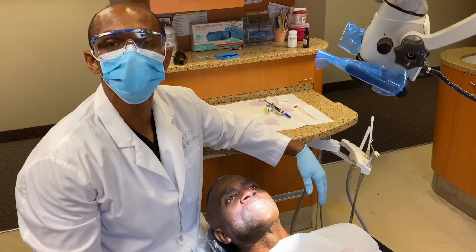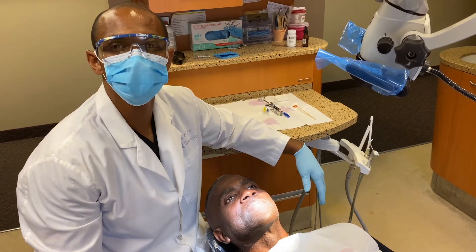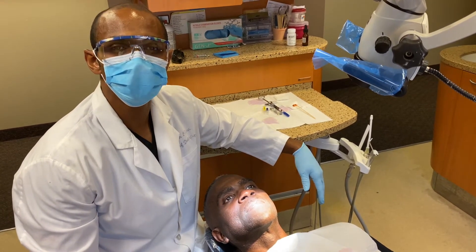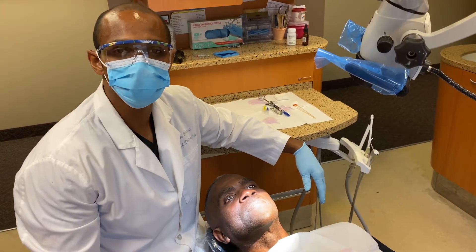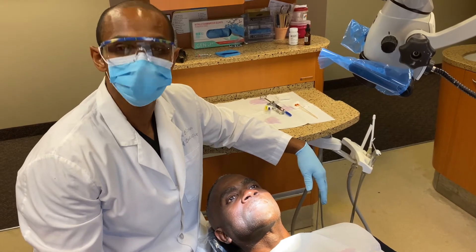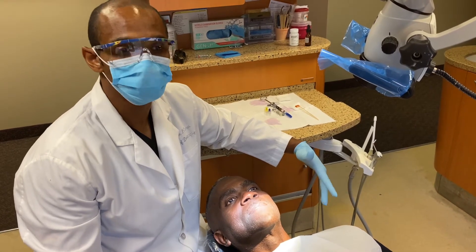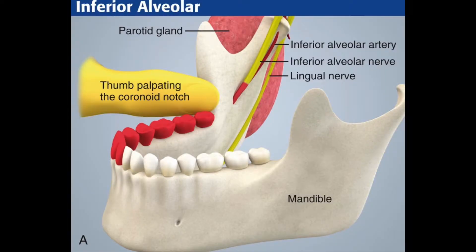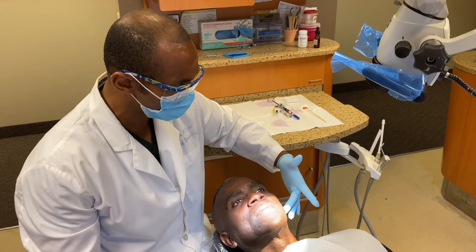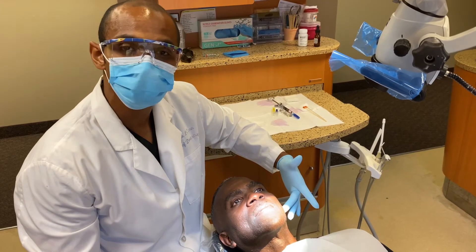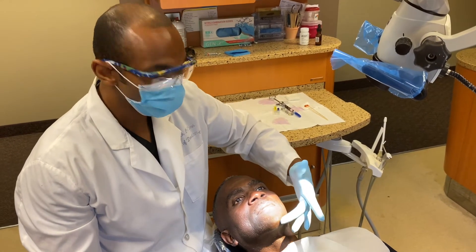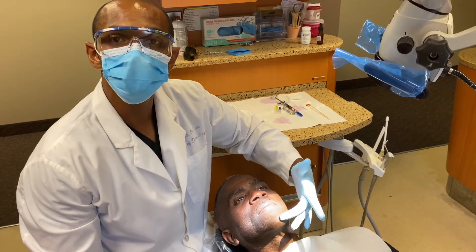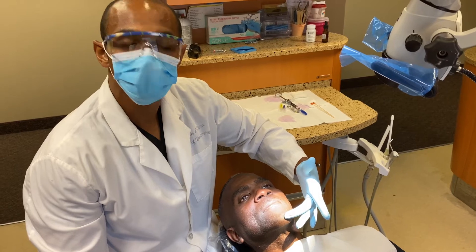The first block we're going to discuss is the inferior alveolar nerve block. The inferior alveolar nerve block will block the entire mandible up to the midline. We're going to go from the ramus of the mandible all the way up to Dr. Bevelle's midline.